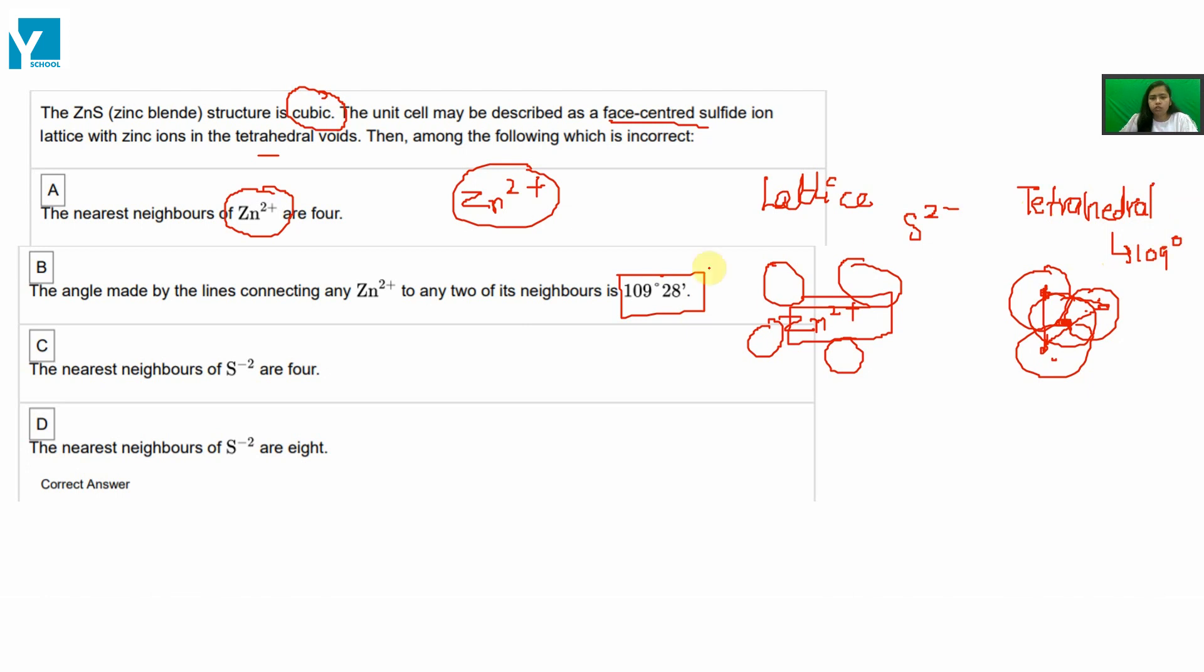So this is again right. The nearest neighbors of S²⁻ are four. Look...